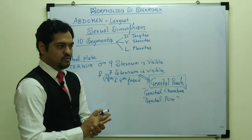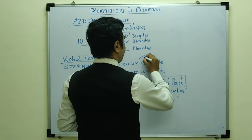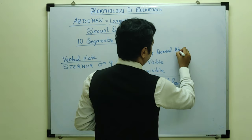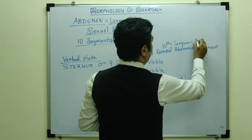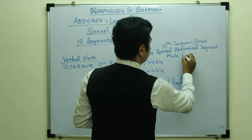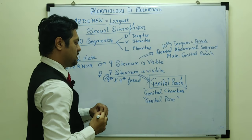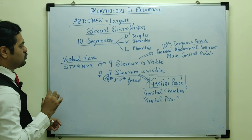In the male, 9 sternites are visible and there is also a male genital pouch. The male genital pouch is present beyond the 10th tergum — the dorsal abdominal segment — and it is located below the anus. So in female the genital pouch is on the lower/ventral surface (sternum level), while in male it is below the anus at the 10th tergum level.